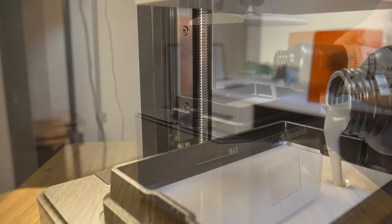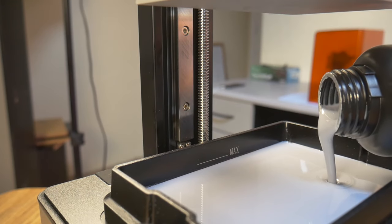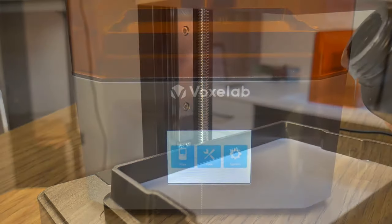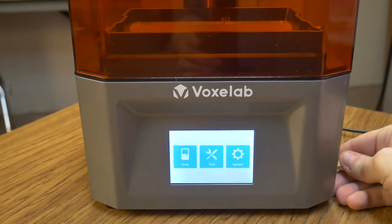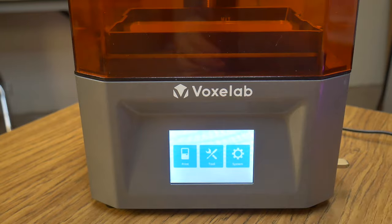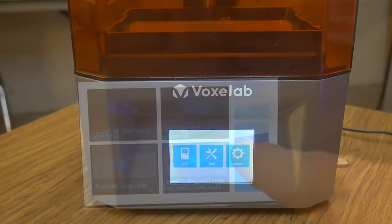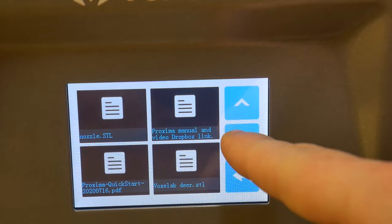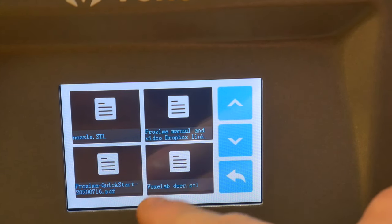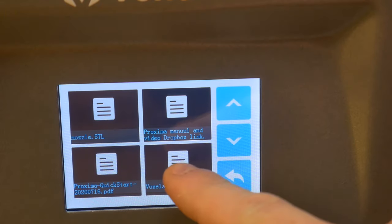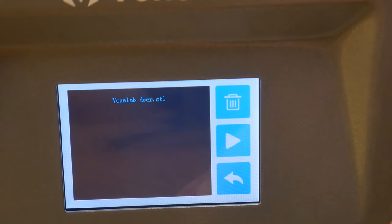I plugged in the provided USB drive expecting to find a test file that was already pre-sliced with optimal settings for this printer. But unfortunately I did not find that. There were test files on the thumb drive, but they were just in the STL format.